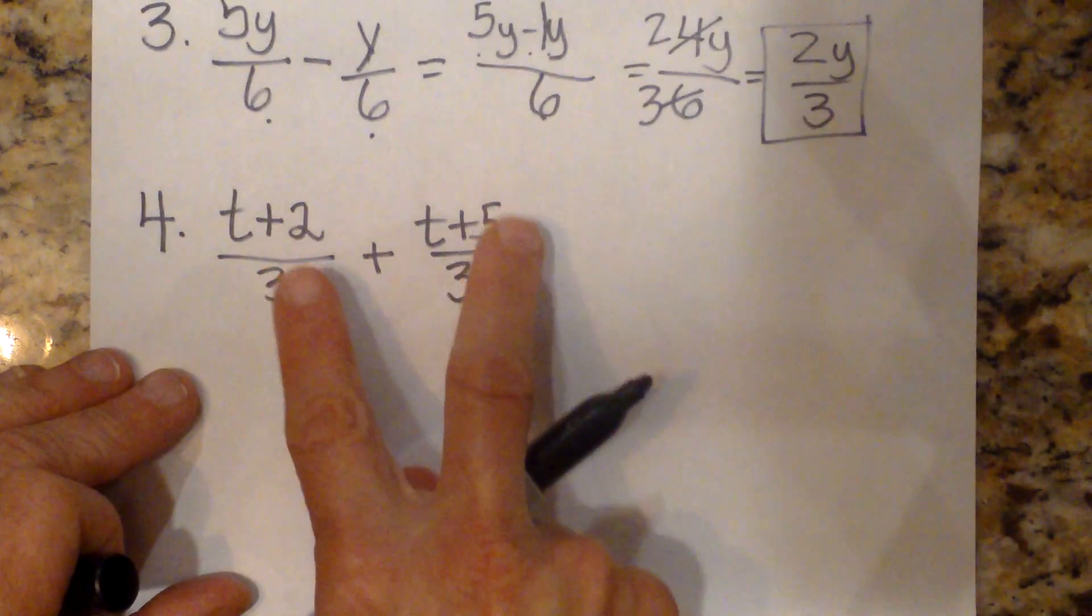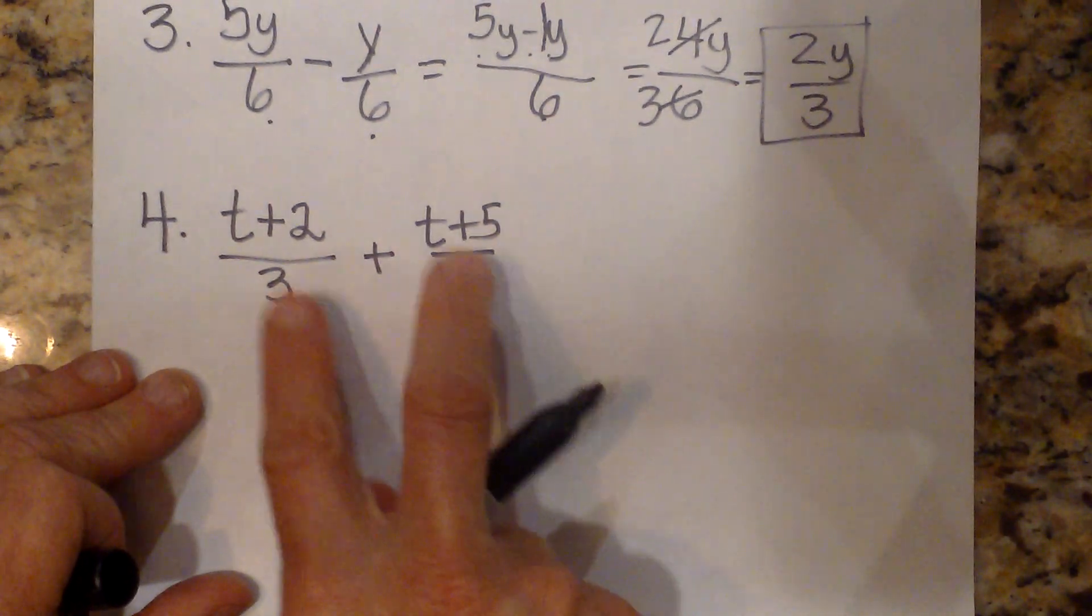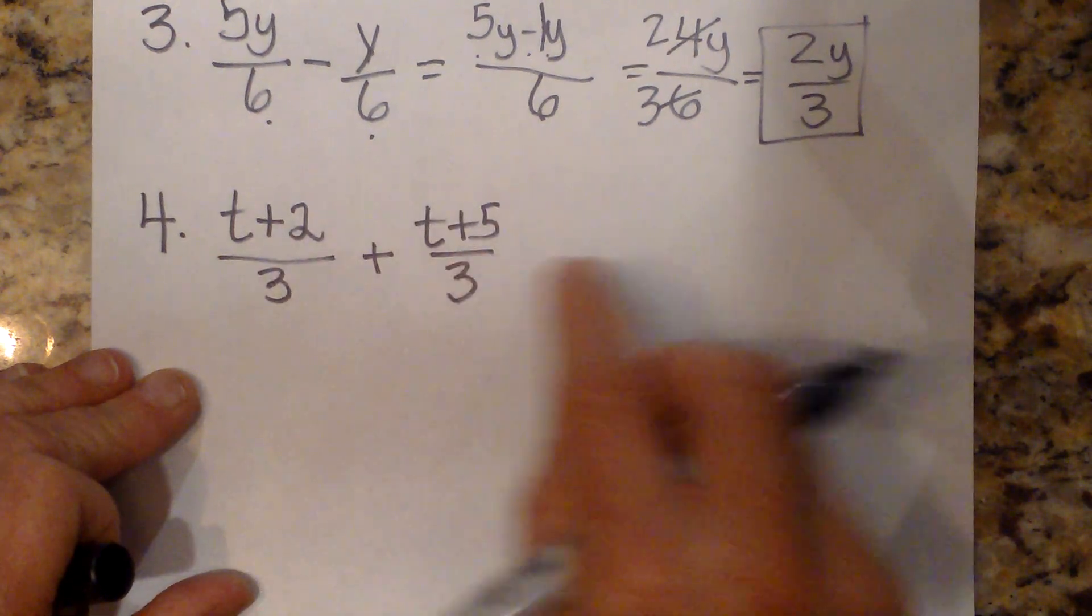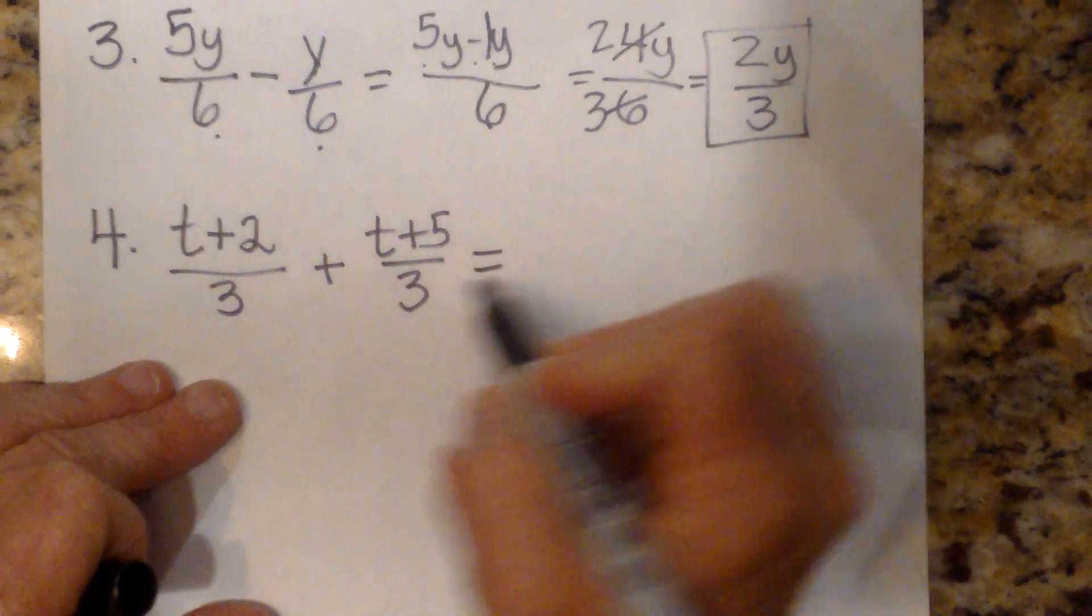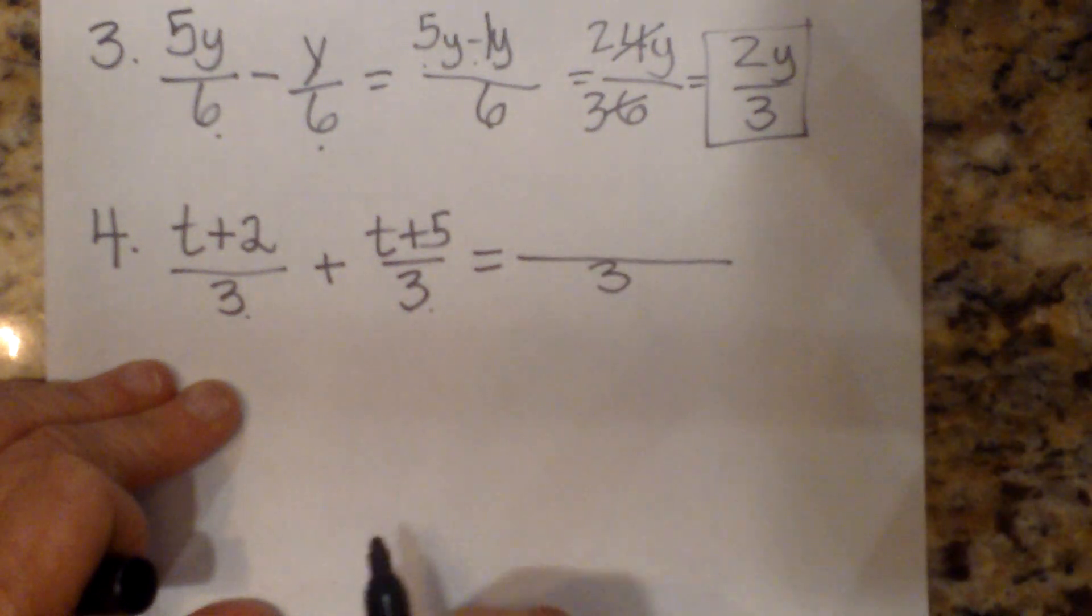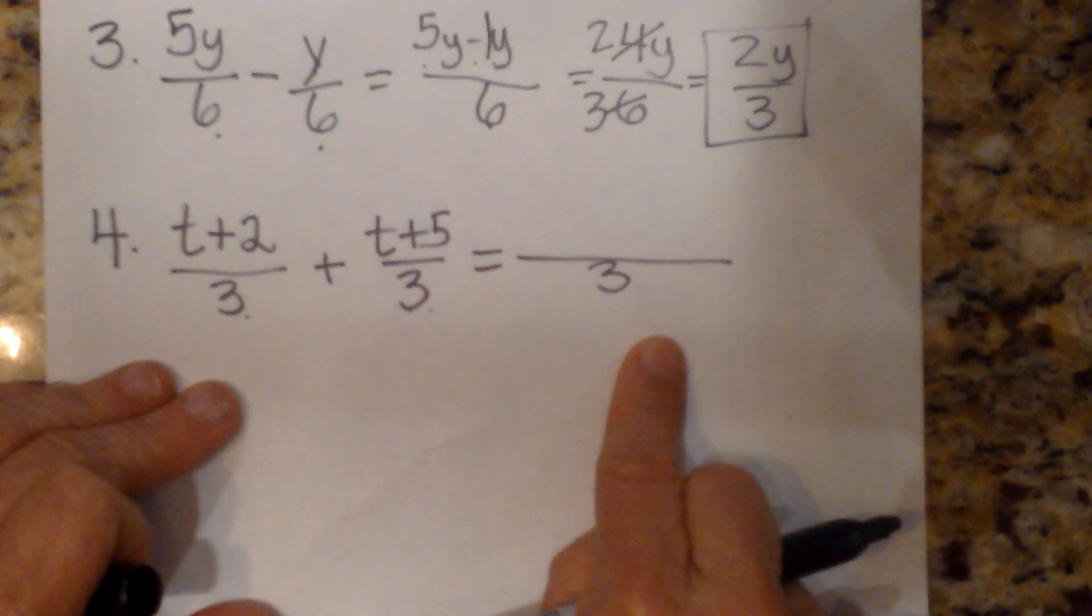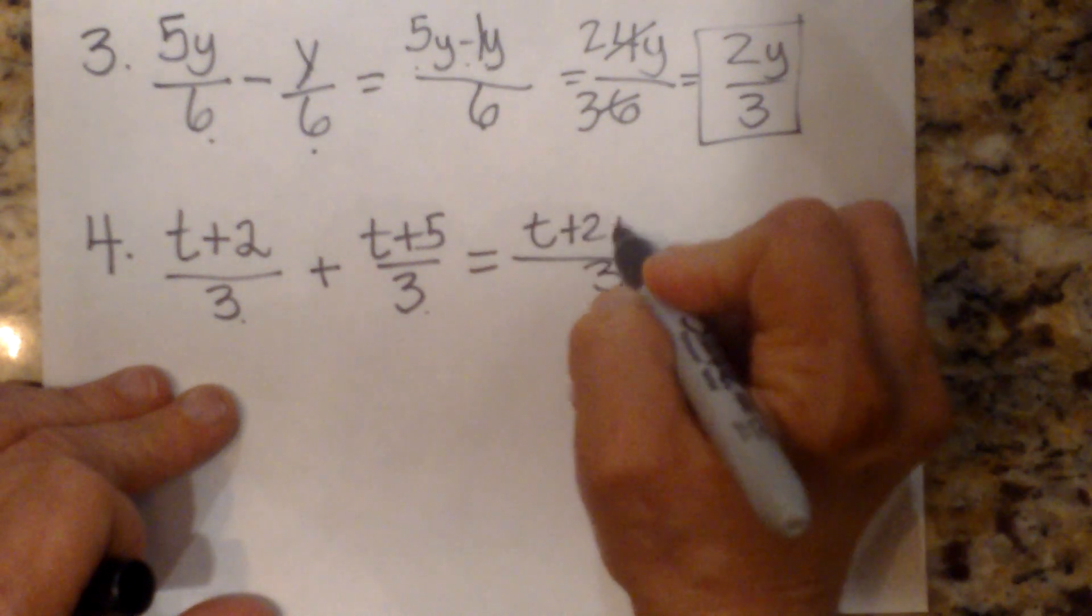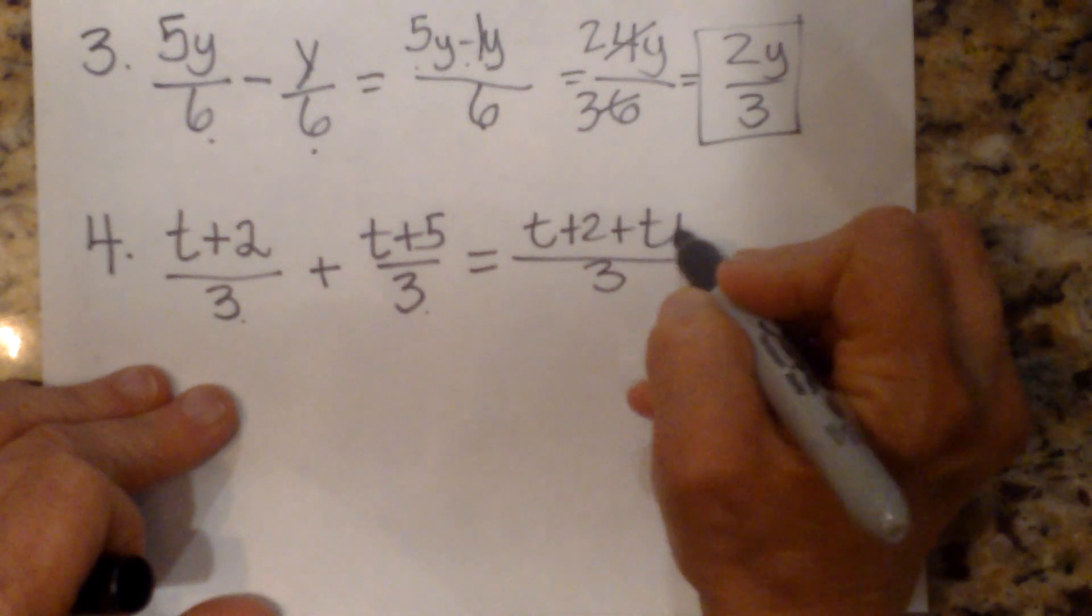Okay, now let's look at one with a common denominator. But this time we have two terms in our numerators, or in the top. So again, we apply the same rule. Since we have a common denominator, we don't have to multiply by any factors. We just bring the common denominator over. Take your numerator and place it in the top. So we're going to add this numerator.